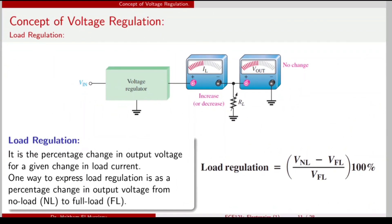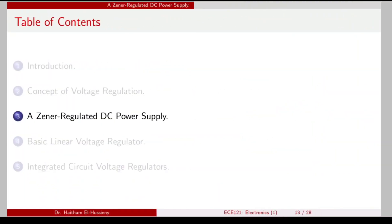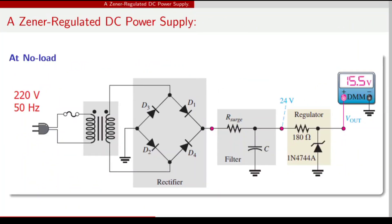Load regulation: V no-load minus V full-load divided by V full-load gives load regulation. It is the percentage change in output voltage for a given change in load current. In the practical circuit, 230 volts 50 Hz is connected to the plug as input supply, then a step-down transformer steps down the voltage, followed by a bridge rectifier whose output is connected to a capacitor filter — RC or LC filters can be used.